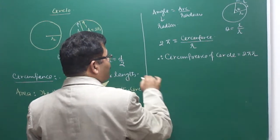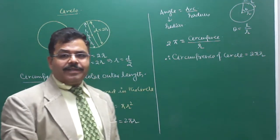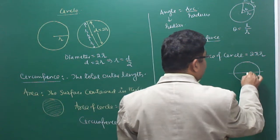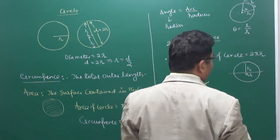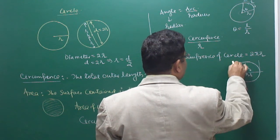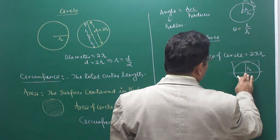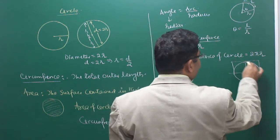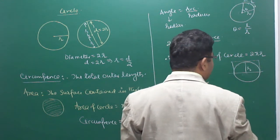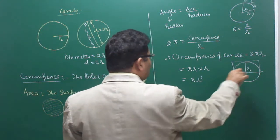The area of the circle can be derived from length × breadth. The circumference is 2πr, so half the length is πr and the breadth is r. Since half the circle is symmetrical and will combine to cover a rectangle, area = πr × r = πr².